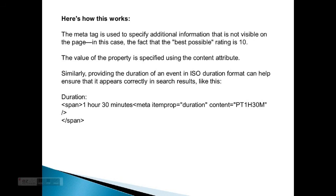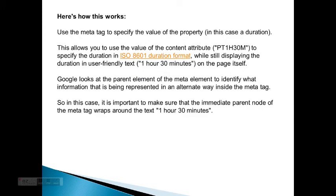Here's how this works. The meta tag is used to specify additional information that is not visible on the page — in this case, the fact that the best possible rating is 10. The value of the property is specified using the content attribute. Similarly, providing the duration of an event in ISO duration format can help ensure it appears correctly in search results. For example: span — 1 hour 30 minutes — with meta itemprop equals duration, content equals PT1H30M, end span. This allows you to use PT1H30M to specify the duration in ISO 8601 format while still displaying the user-friendly text '1 hour 30 minutes' on the page itself. Google looks at the parent element of the meta element to identify what information is being represented, so it's important to make sure the immediate parent node of the meta tag wraps around the text '1 hour and 30 minutes.'